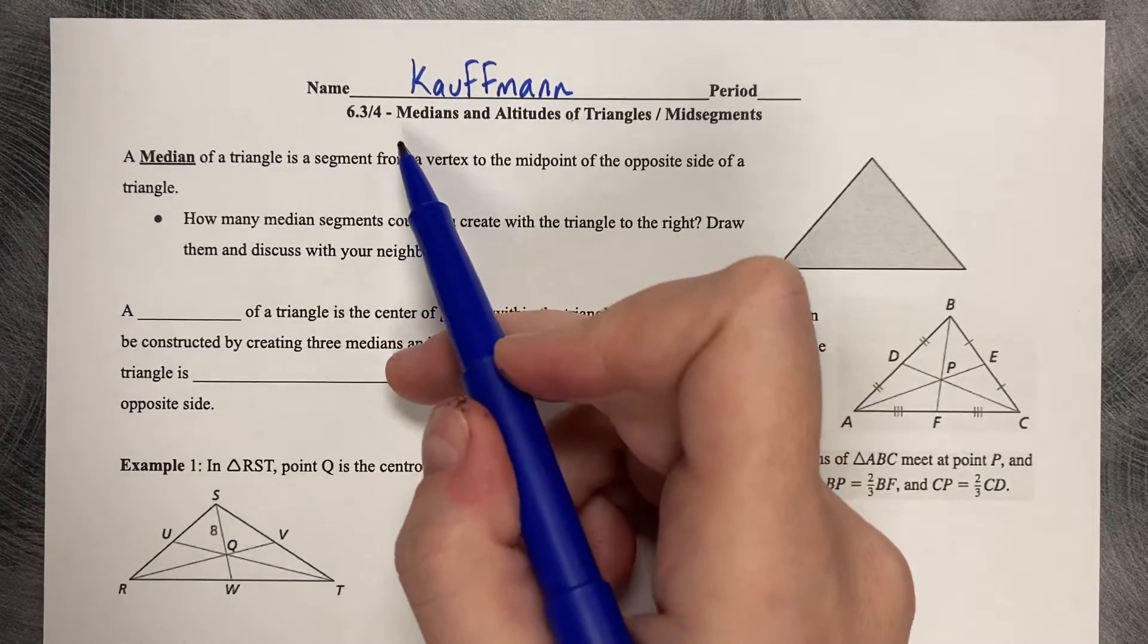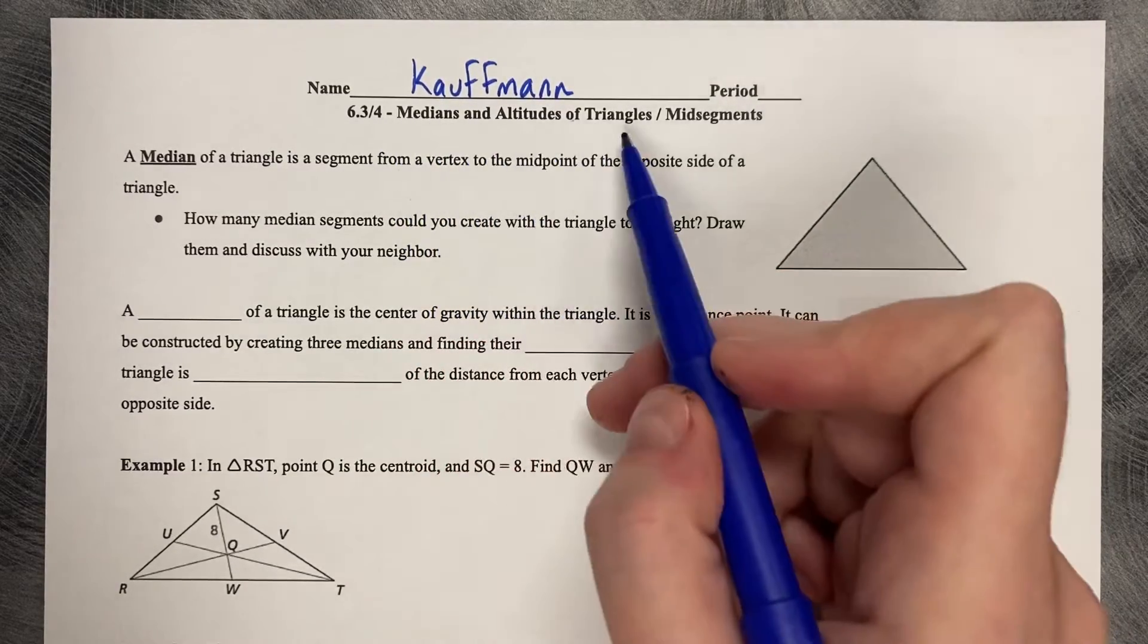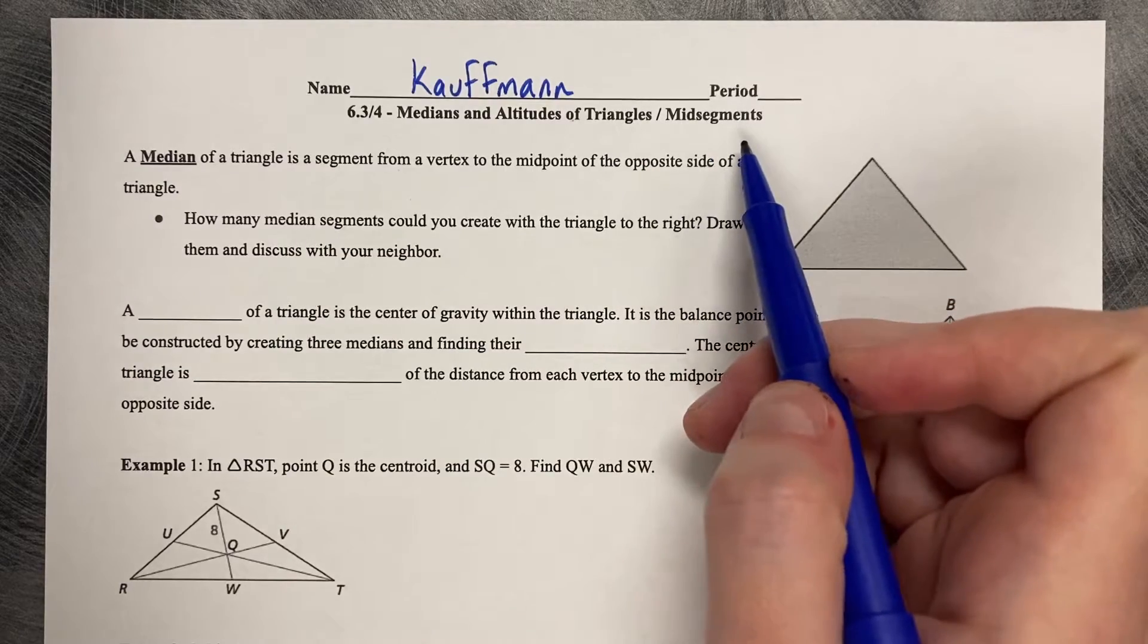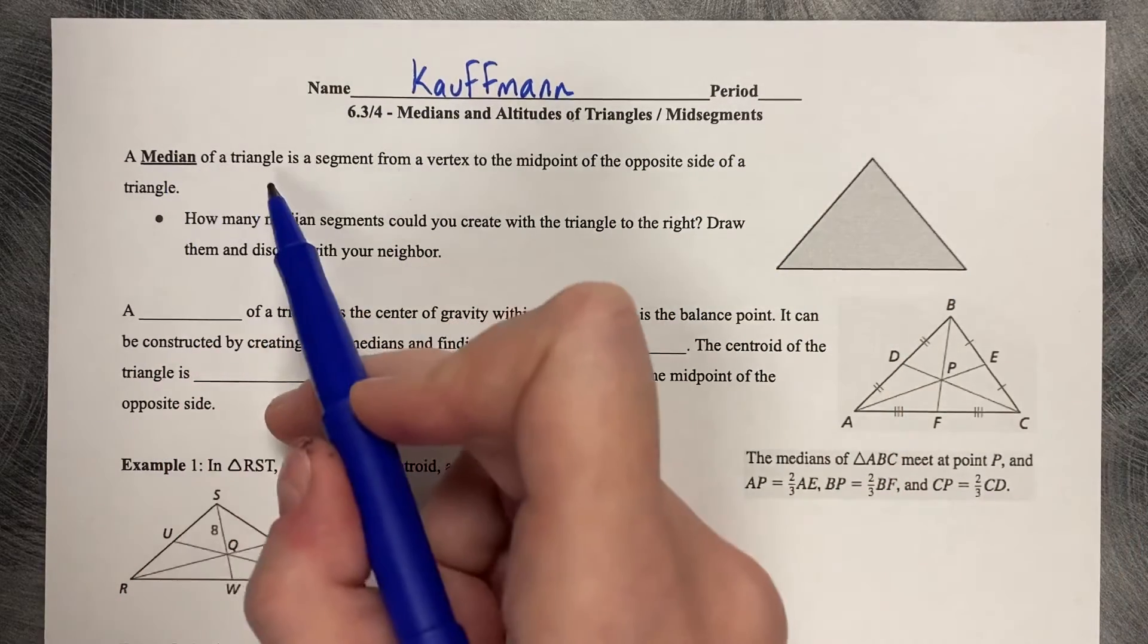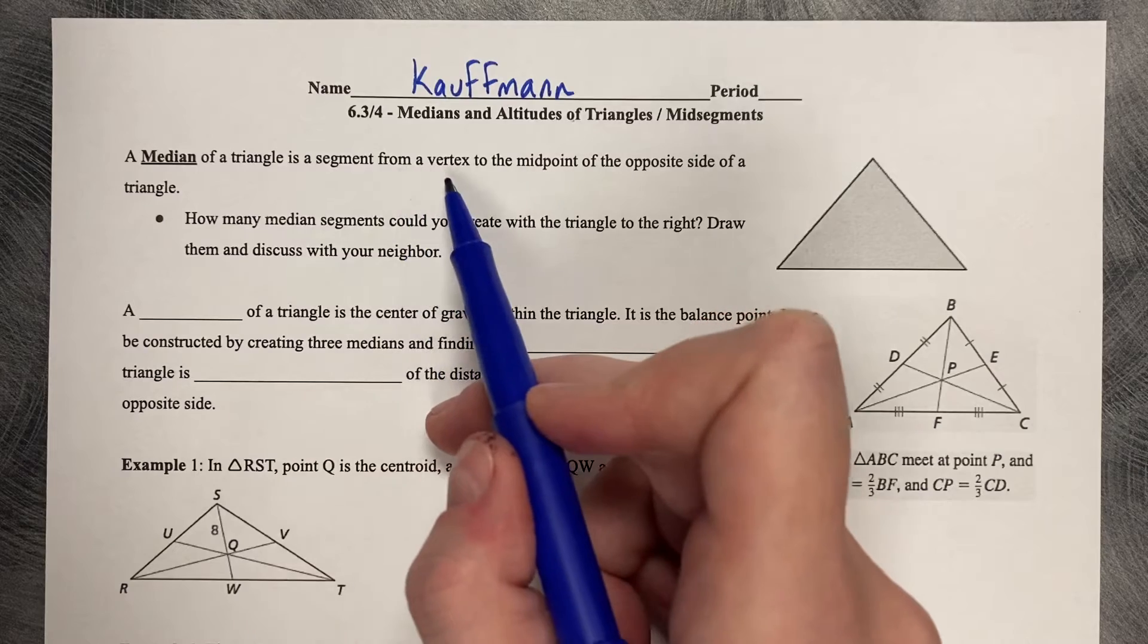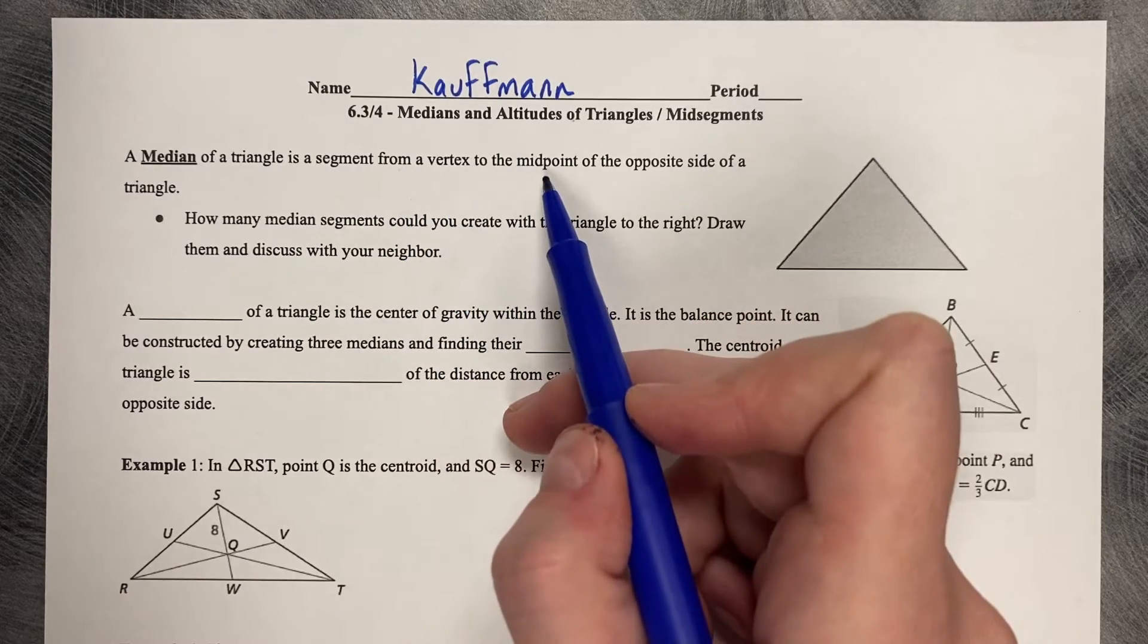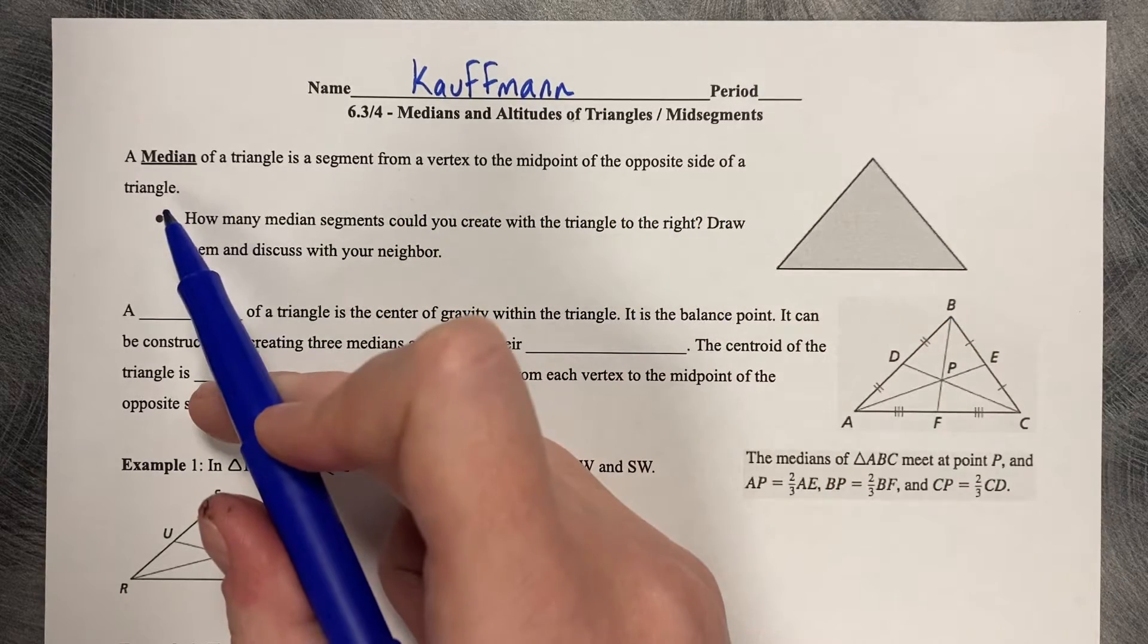6.3 and 4, Medians and Altitudes of Triangles, Mid-Segments. A median of a triangle is a segment from a vertex to the midpoint of the opposite side of a triangle.